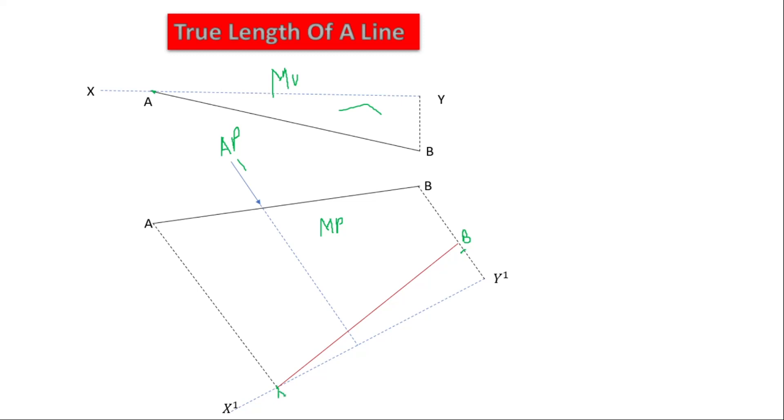We're going to join our A to the B whereby we get our true length. So this length becomes our true length. As simple as that. What you need to know is that we are just projecting this line.